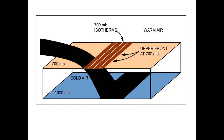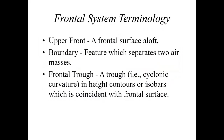Fronts are not just confined solely to the surface where we live. They can also form as upper fronts higher in the atmosphere. That upper front is simply a frontal surface that's aloft or high up above the ground. A boundary is a feature which separates two different air masses. And then you get something known as a frontal trough — a trough in the atmosphere where you have cyclonic curvature to the wind field coinciding with the frontal surface itself.